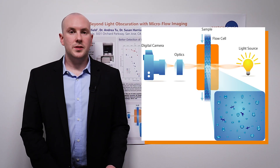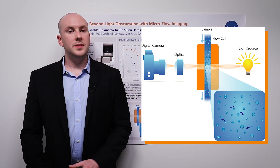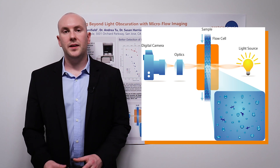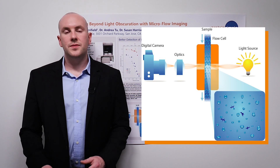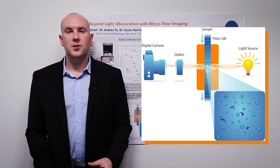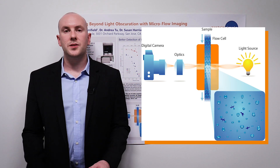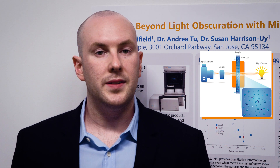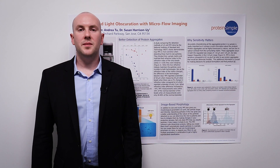The other thing that the flow cell ensures is that all the sample passes through the correct focal depth of the system. Any optical setup under magnification has a focal plane, and it's very important that all the particles are measured within the same focal plane to ensure that the measurements are accurate, precise, and that you can fairly compare particles measured in the same sample.